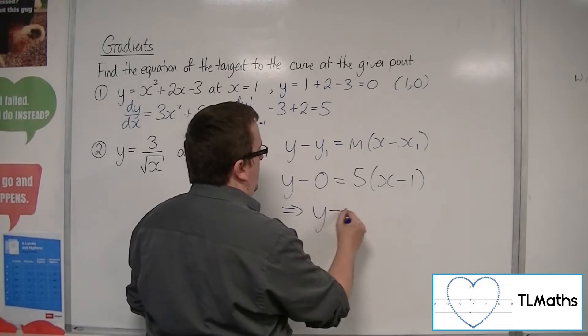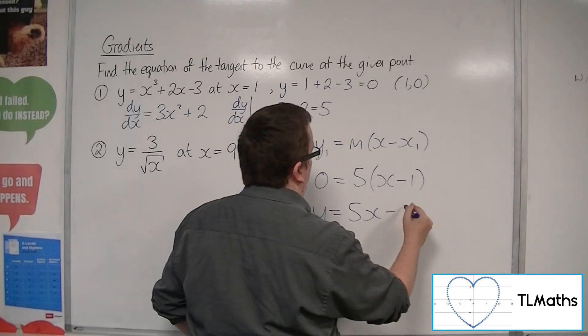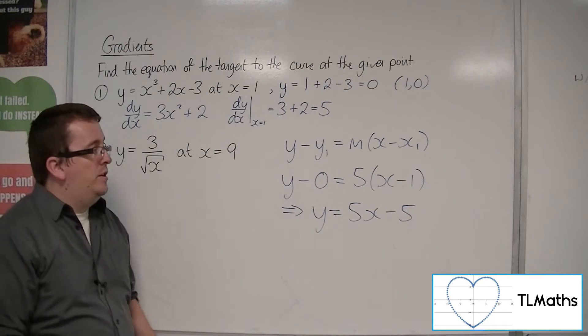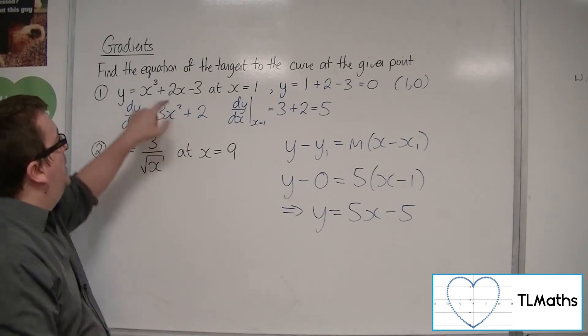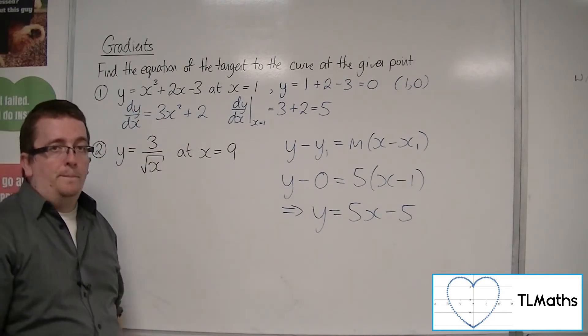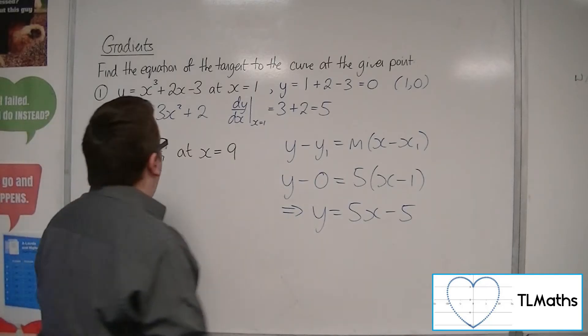So y equals 5x minus 5. That's the equation of the tangent going through this curve at the point x equals 1. So that's the first one.